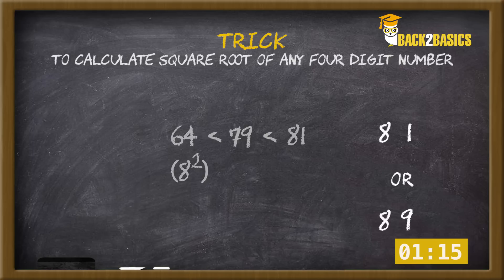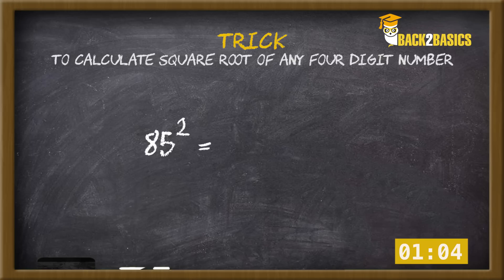Step 4 is to calculate the square of a number ending with 5 that lies between 81 and 89, which is 85. 85 square according to our trick is 5 square 25, and 8 into 9 gives us 72, which gives us 7225.